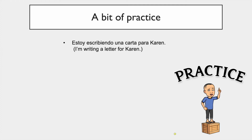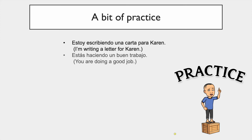If you say 'estoy escribiendo una carta para Karen,' it means 'I'm writing a letter for Karen.' As you can see, in English the present continuous or present progressive is used similarly — just as you use it in English.